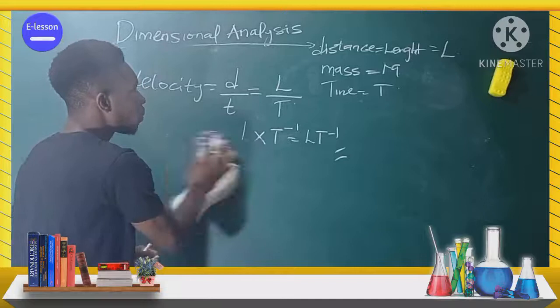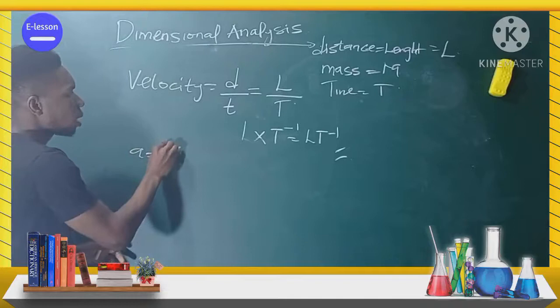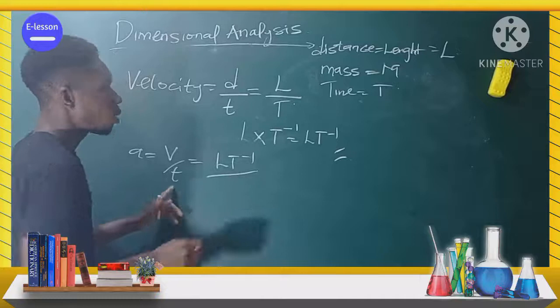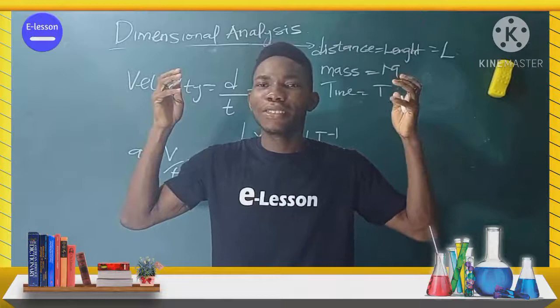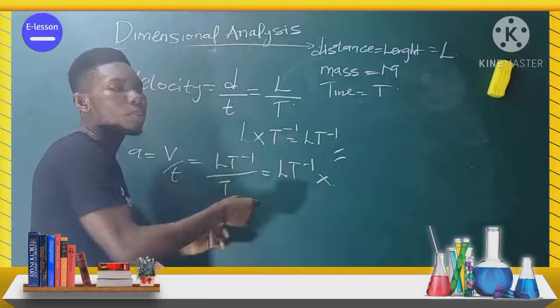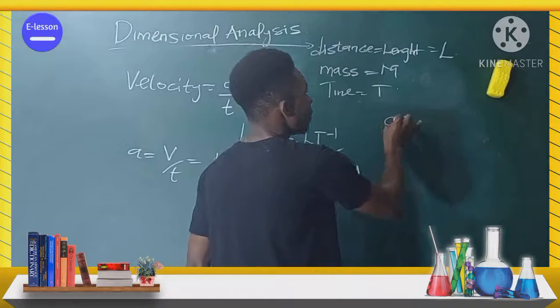Now let's look at acceleration. Acceleration is velocity over time. Velocity is LT⁻¹. So we have LT⁻¹ over T. The dimension for time is T, so we now have LT⁻¹ over T. When this T comes up from the denominator it also becomes T⁻¹.